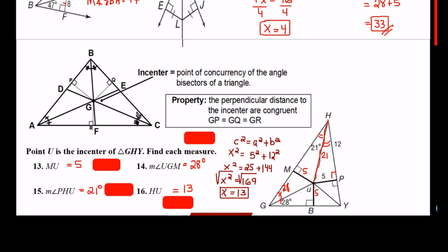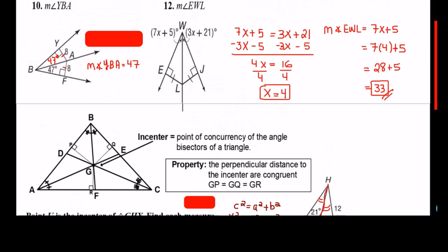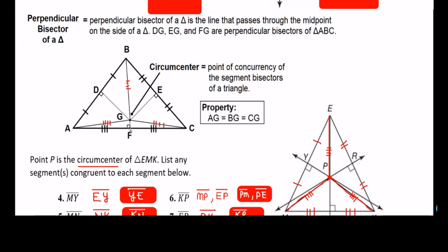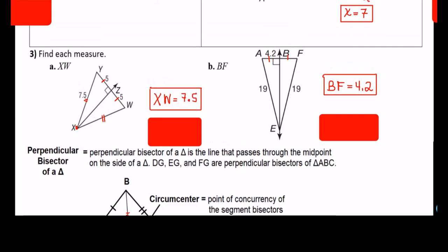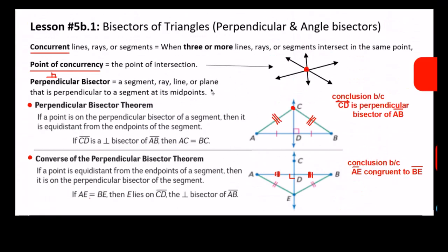That concludes the lesson for today. We talked about angle bisectors and perpendicular bisectors. The key information: the angle bisectors' point of concurrency is called the incenter, and the perpendicular distances from the incenter to the sides are congruent. For perpendicular bisectors, the point where they meet in the triangle is called the circumcenter, and the distances from the vertices to that point are all congruent. Thank you very much for your time. Have a great day.